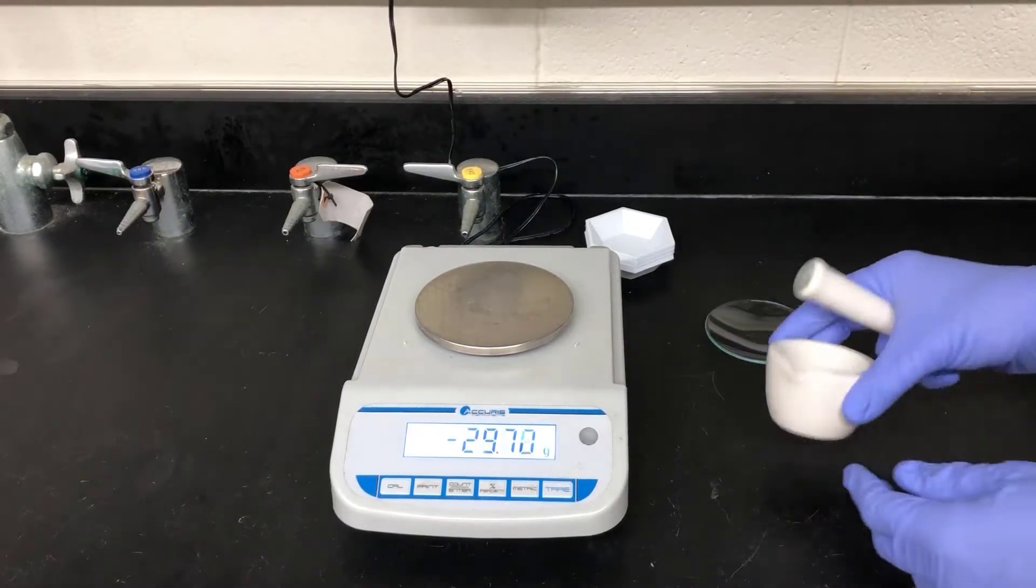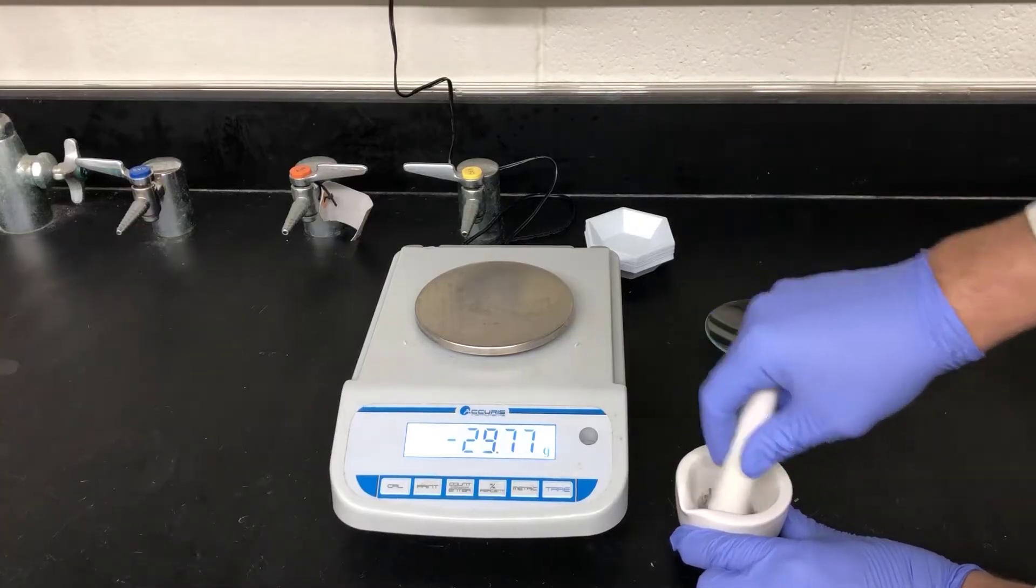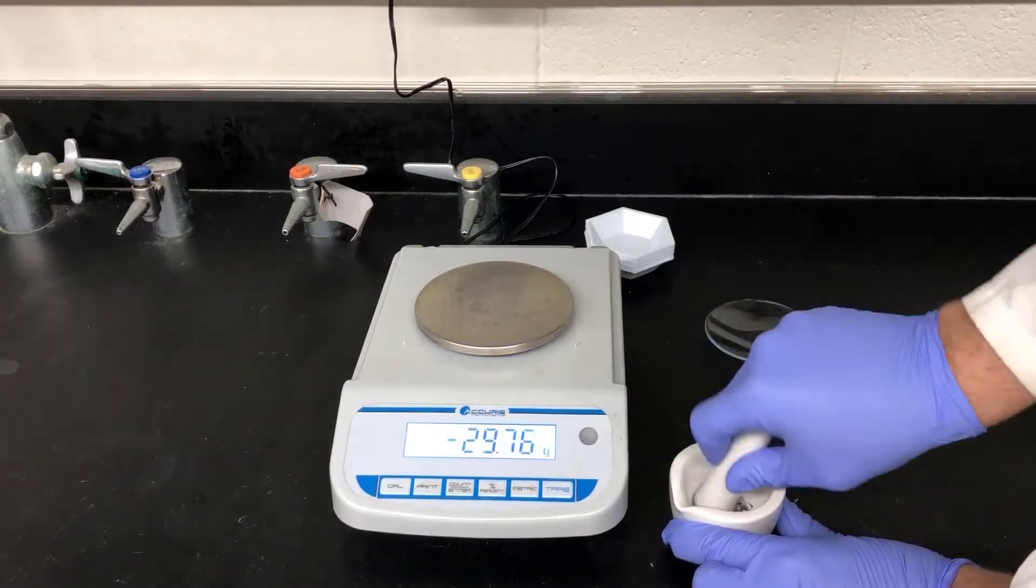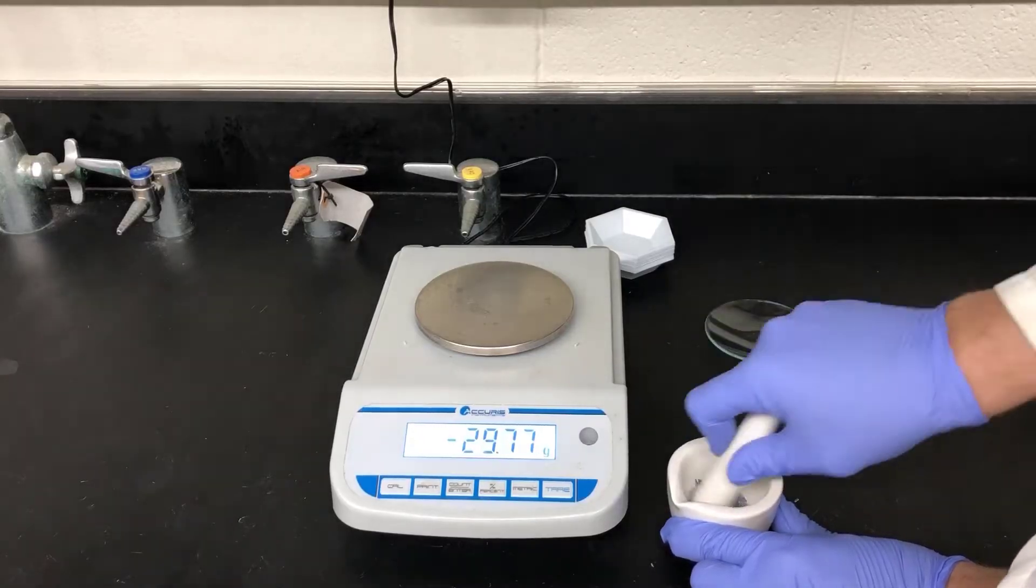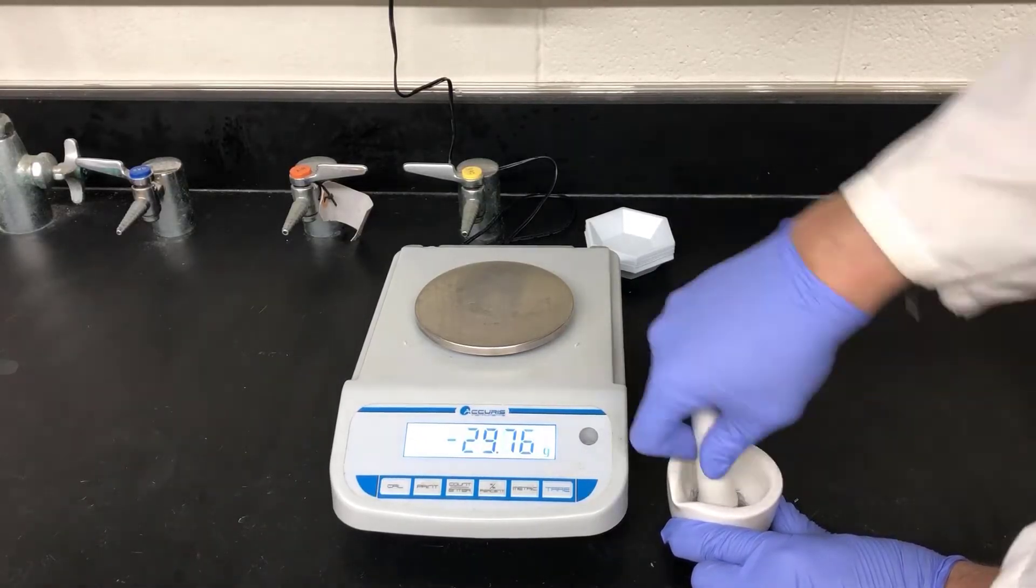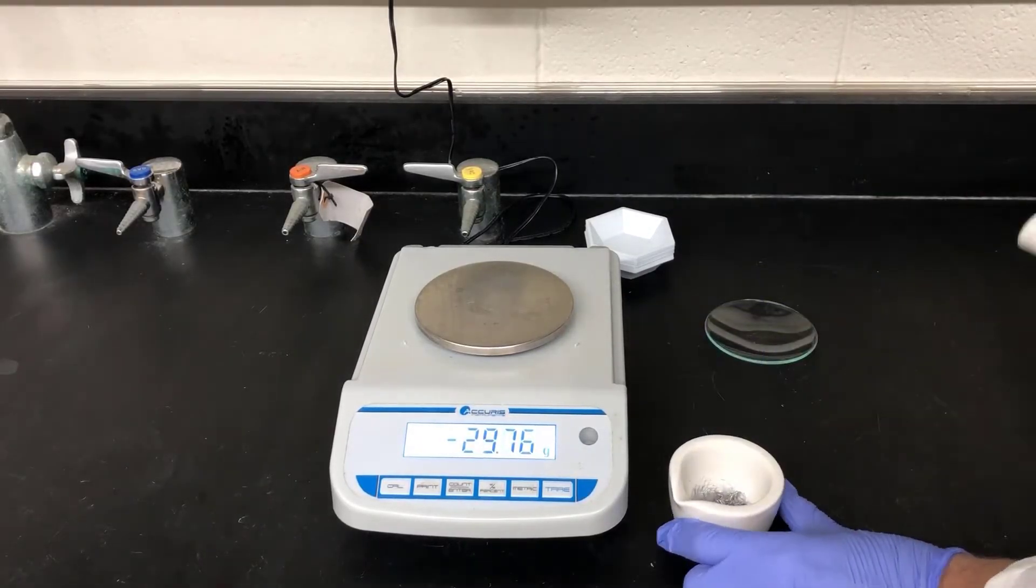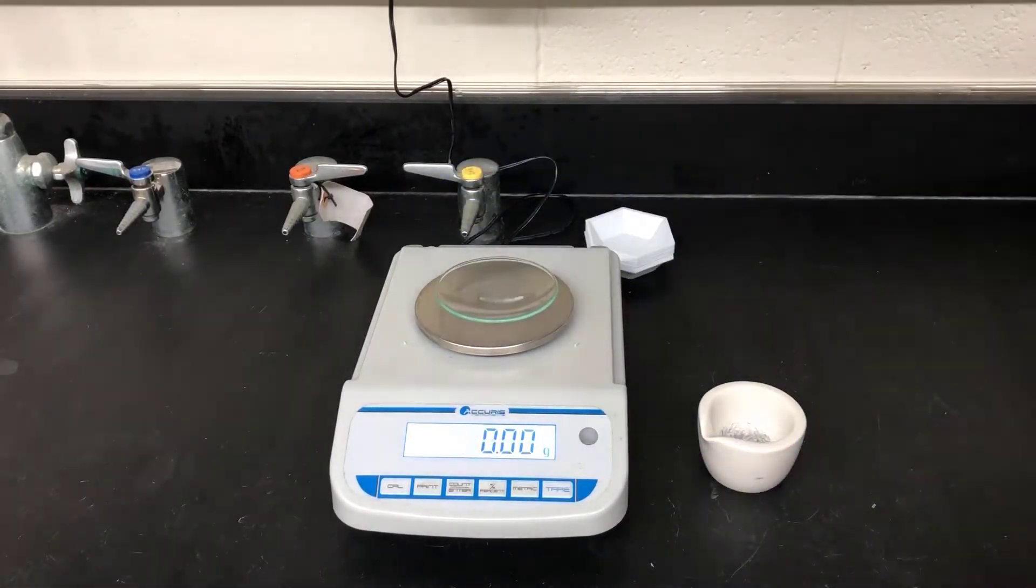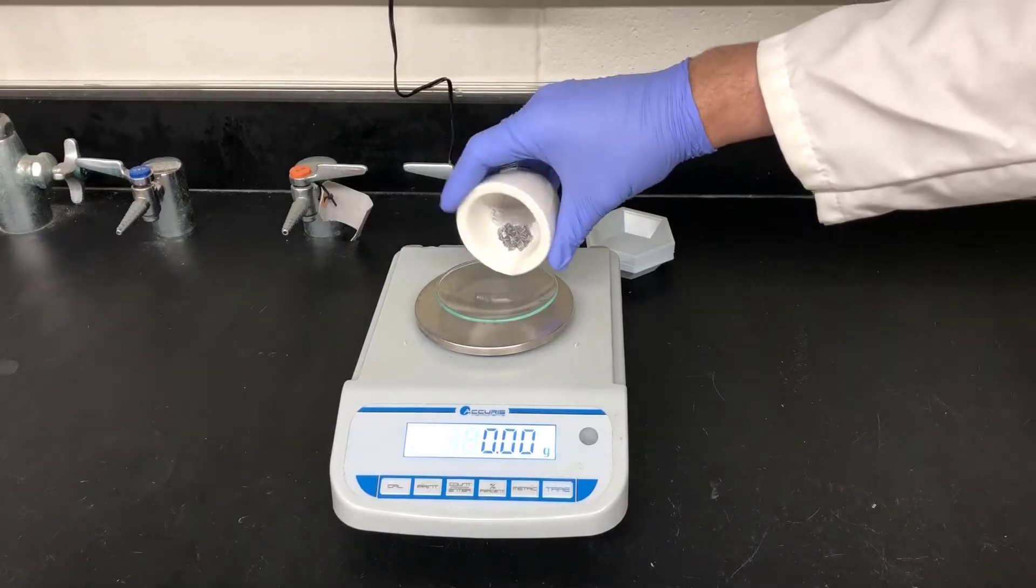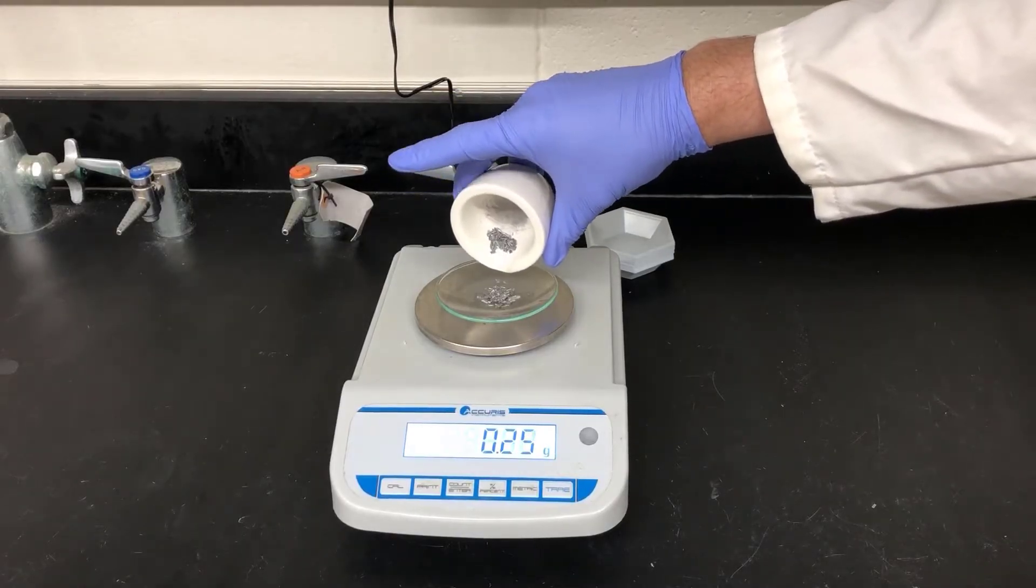The point of grinding the magnesium is to shine it up, exposing fresh metal surface. The Grignard reagent forms at the surface of the magnesium, and having fresh metal exposed is important in getting the reaction to go. Don't expect to powderize the magnesium, that'll never happen. Just shine it up, and crush the chunks a little bit if you can. Now I'll weigh out 0.60 grams of this ground magnesium to put in the reaction mixture.